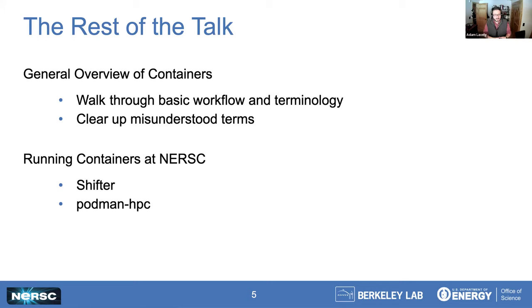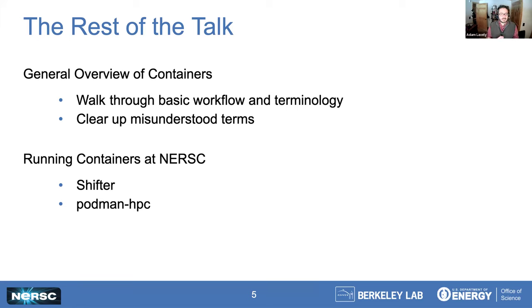For the rest of the talk, I'm going to first give a general overview of the container workflow with all the terminology in a very agnostic way — whether it's Docker or Podman HPC, it won't matter too much. Then we're going to dive deeper into running containers on Perlmutter. We have two different container engines available: Shifter and Podman HPC. We'll jump in primarily with Shifter, and then I'll show you some minor differences with Podman HPC.